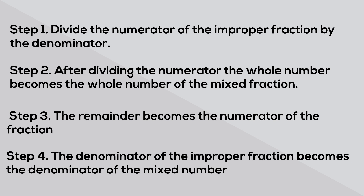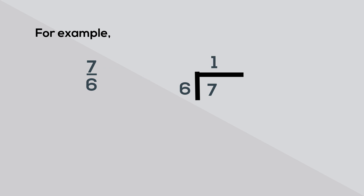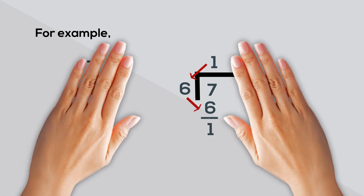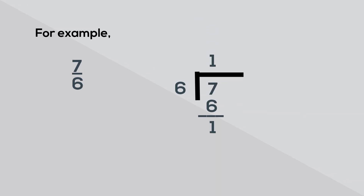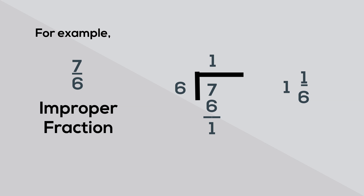Let's take a look at a couple of examples. Let's convert 7/6 into a mixed number. First, we divide the numerator 7 by the denominator 6. 6 goes into 7 one time. 1 times 6 is 6, and 7 minus 6 is 1, so you have a remainder of 1. The quotient of 1 becomes the whole number, the remainder becomes the numerator, and the original denominator becomes the denominator of the mixed number. So 7/6 becomes 1 and 1 sixth.